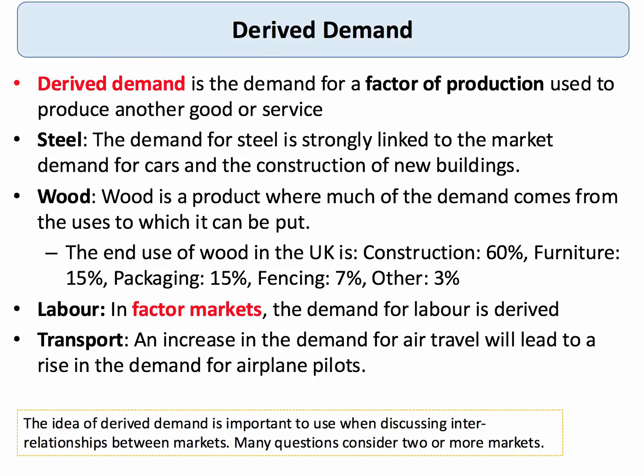This brings us to an important concept. The idea of derived demand is a very important topic in AS economics. Derived demand is the demand for a factor of production used to produce another good or service. Our question was about oil, but equally we could think of products such as steel. The demand for steel very strongly links to the market demand for new cars and construction projects.